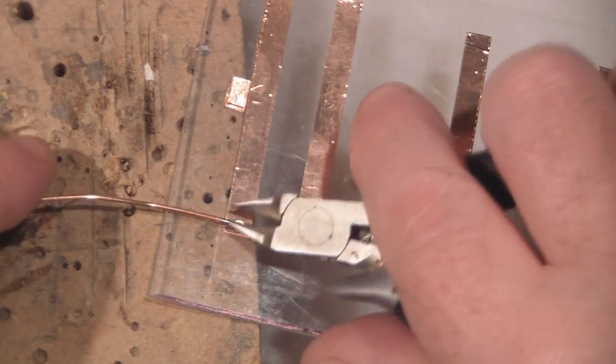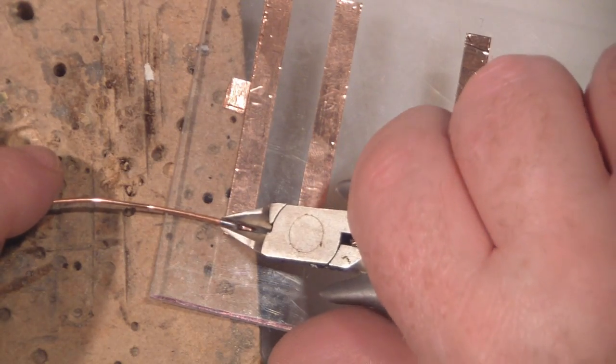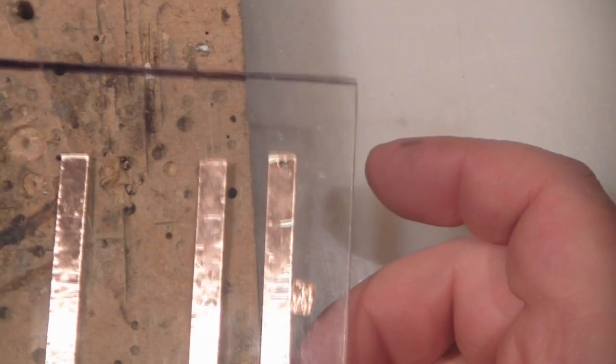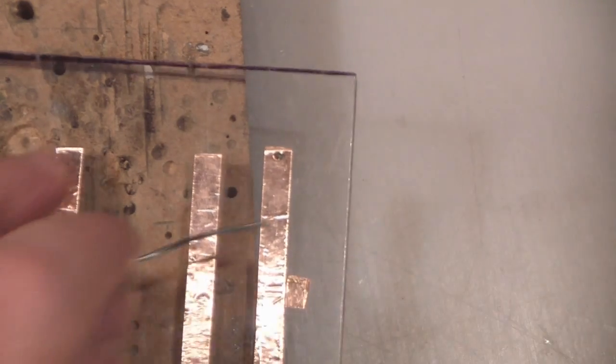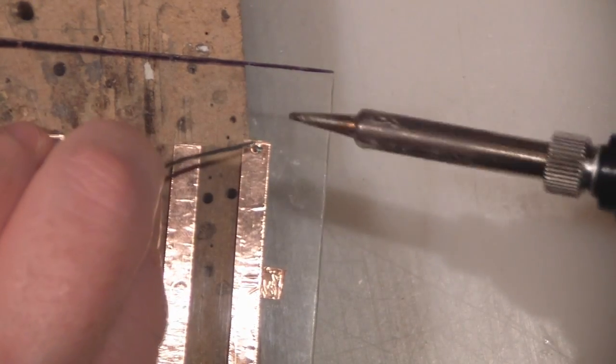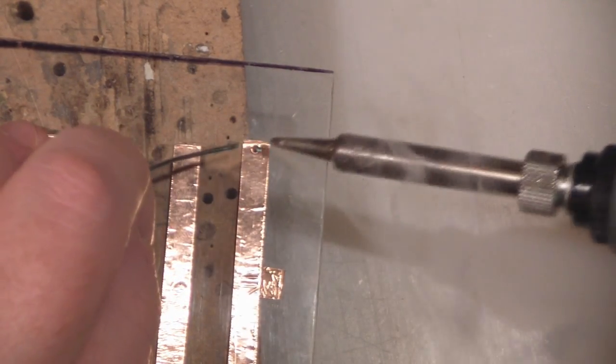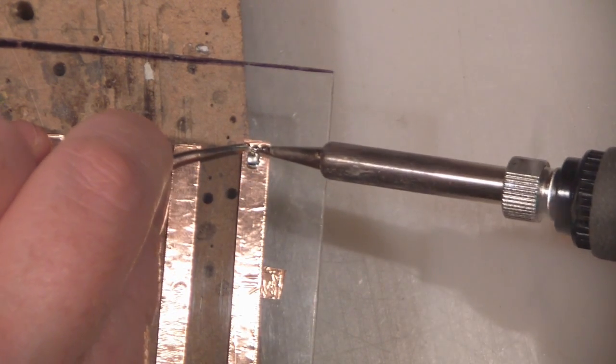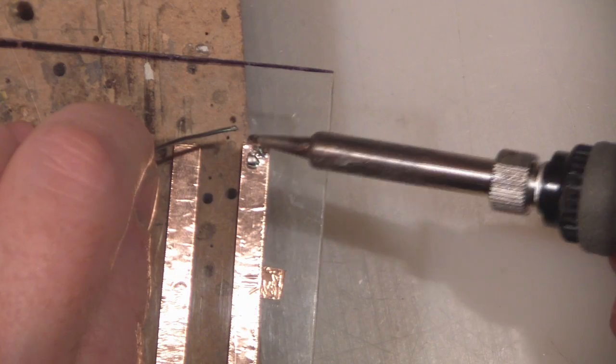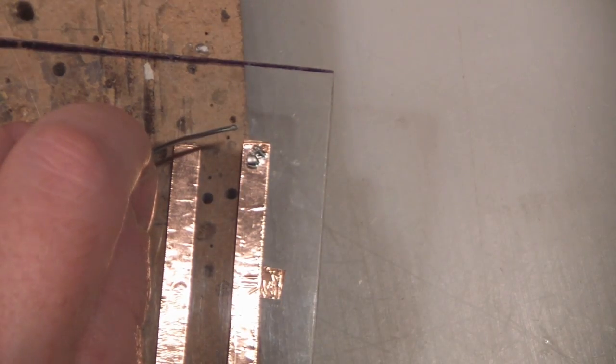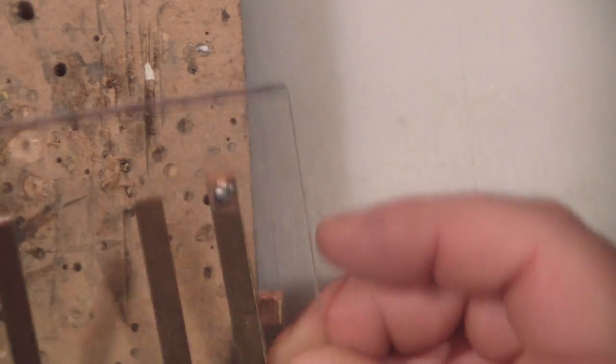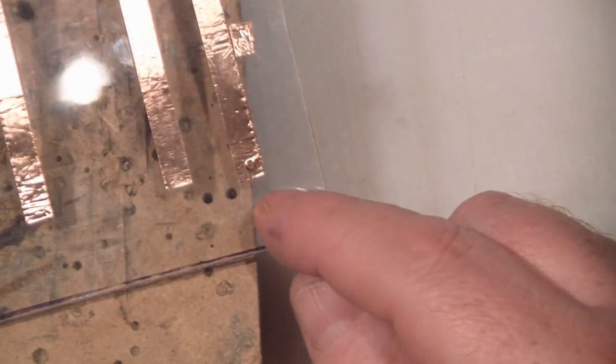I'll just cut away the excess with some little cutters and apply a little bit of solder on this side. And now I'll do the same on this end.